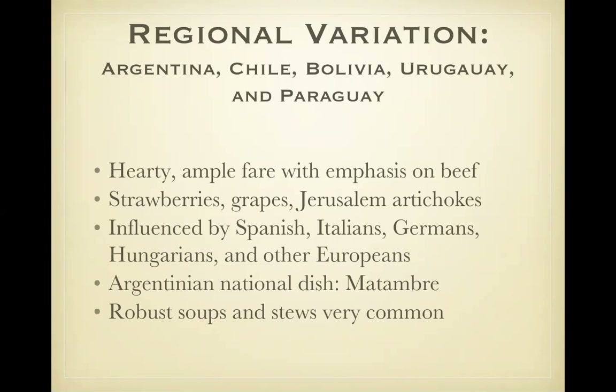Regional variation — Argentina, Chile, Bolivia, Uruguay, Paraguay. Argentinians eat more beef per capita than any other country worldwide. They also have lots of produce that grows there. Argentina's national dish is matambre, which literally means 'to kill hunger.' It is a special cut of flank steak seasoned with herbs, rolled with spinach, hard-boiled eggs, and carrots, then poached or baked. Sometimes sold cold or as an appetizer.